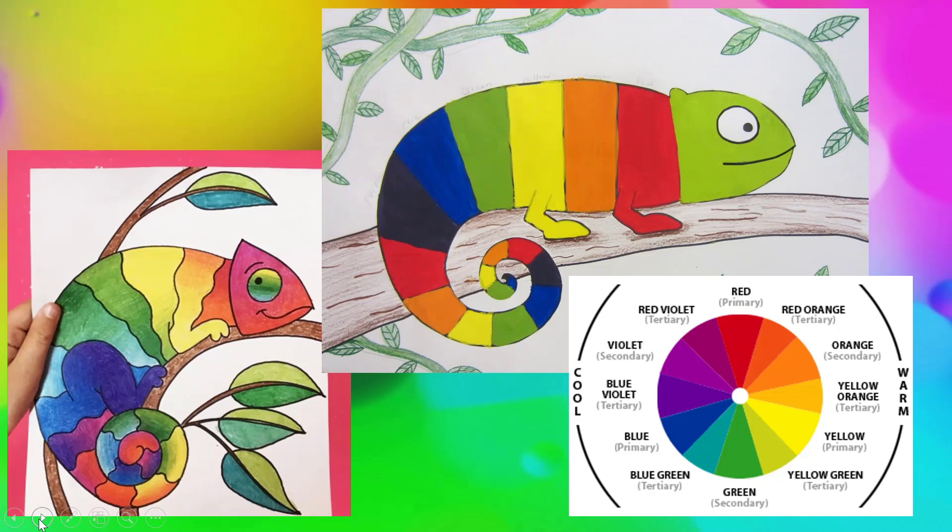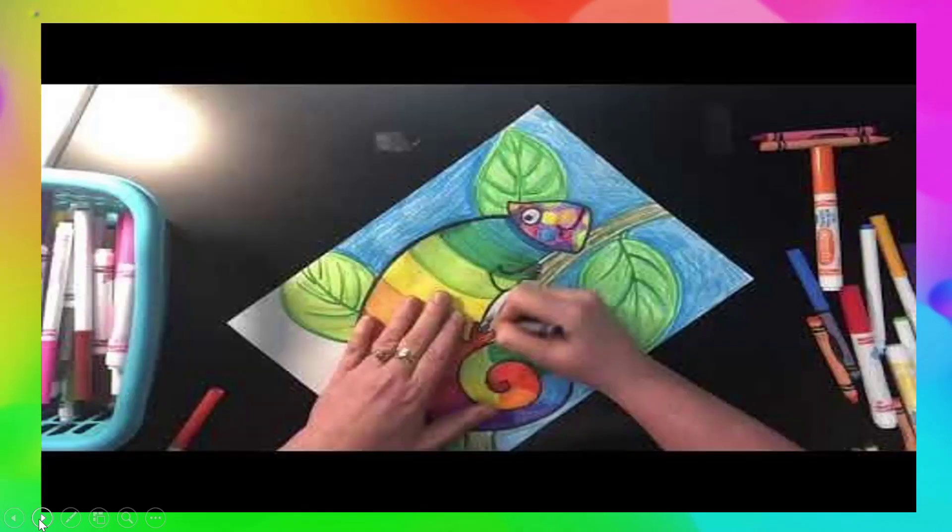We are going to remember all the colors of the color wheel by making a really cool color chameleon today. If you need to look back at the color wheel to help you remember, that is a great idea. We're using a chameleon because chameleons live in rainforests and love to change color. They're a great animal to draw when you're learning about color.